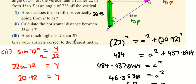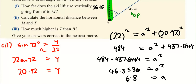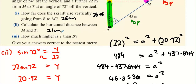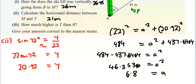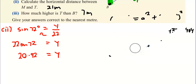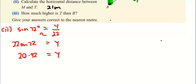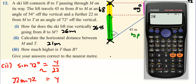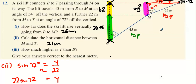Giving answers correct to the nearest meter: the first answer (B to M vertical rise) is 26 meters, the second answer (horizontal M to T) is 21 meters. For how much higher T is than B, it's 26.45 plus 6.81, which is 33.25 — so 33 meters.